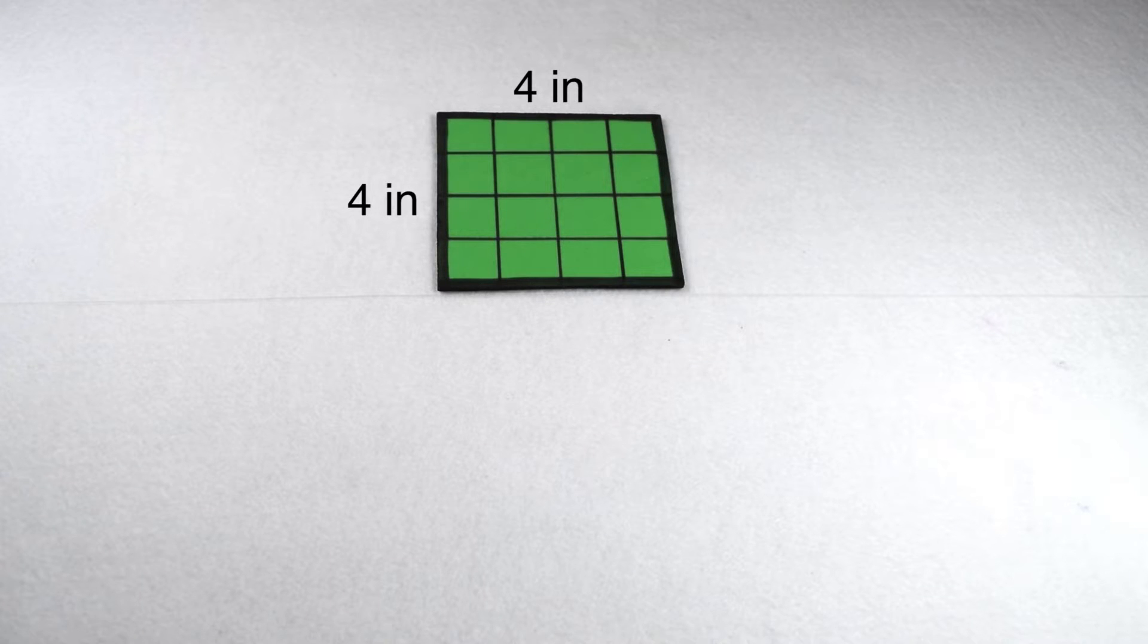If we counted how many squares, we can see that this would give us a total of 16 squares worth 1 inch each, or an area of 16 square inches. Area is always labeled in square units. We can abbreviate the squared part using an exponent of 2 since area is a two-dimensional measurement.